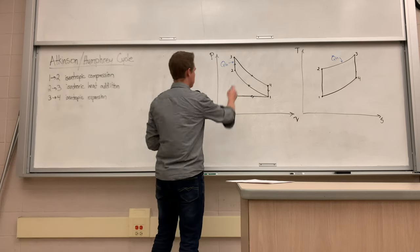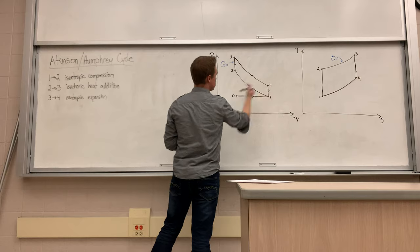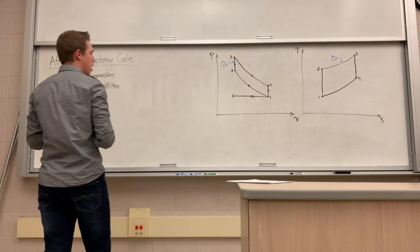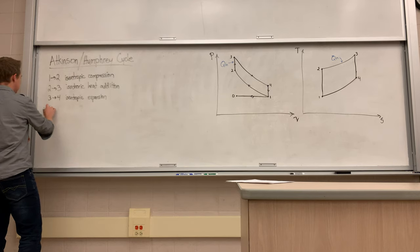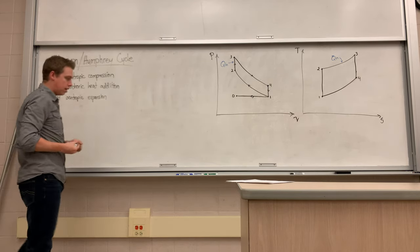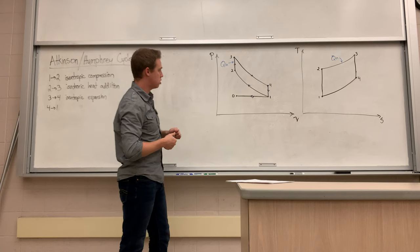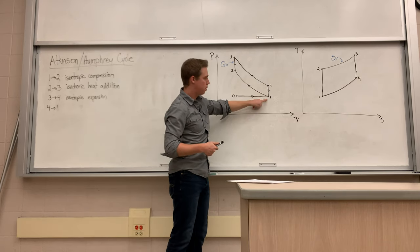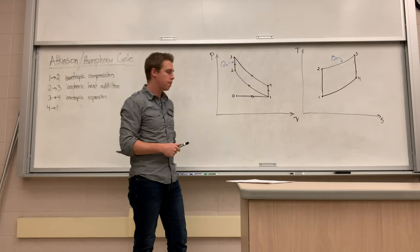During isentropic expansion the volume is growing again from three to four. Now we have step four to one — I'm not going to fill it in yet because this is the path we're going to change.